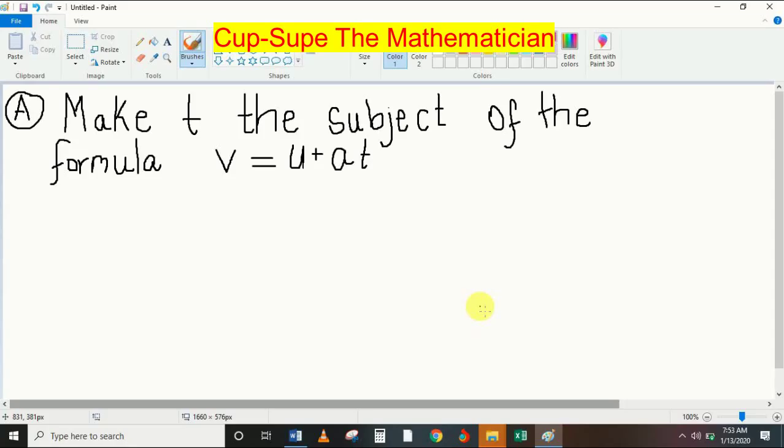One of my viewers made a request for me to do a two-part question. Part A: Make T the subject of the formula V equals U plus AT.